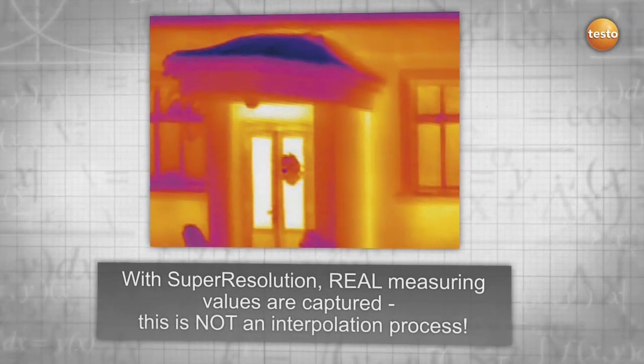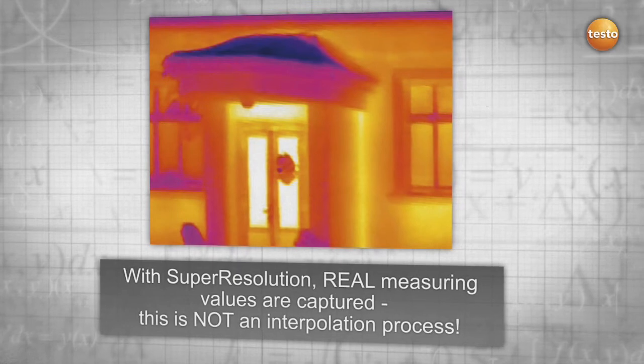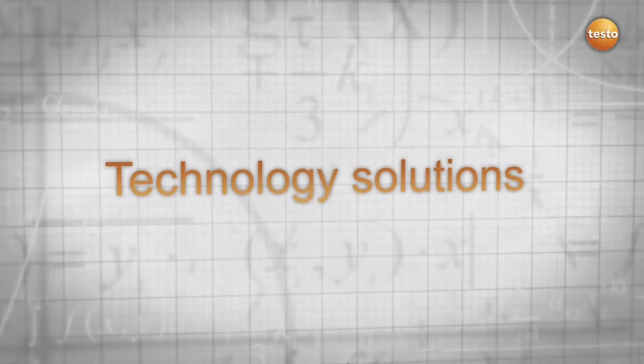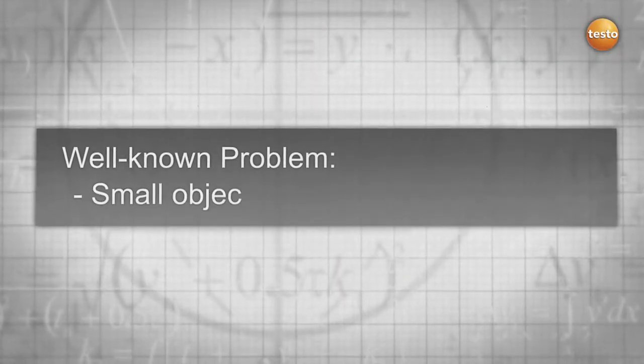The problem is well known: small objects are invisible in the image, and even if visible, the measured values are not correct. The Testo solution: super sampling and deconvolution.